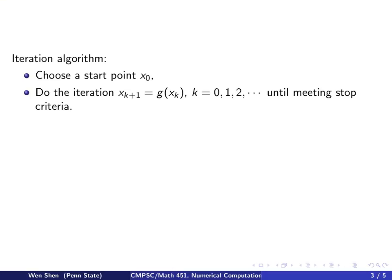So the iteration algorithm actually is quite simple. You choose a starting point, call it x0, and then you do the iterations, and in each iteration, you simply plug in xk into the function g and evaluate it, and that value will be your xk plus 1. And then you just keep going until you have some stop criterion that's met.